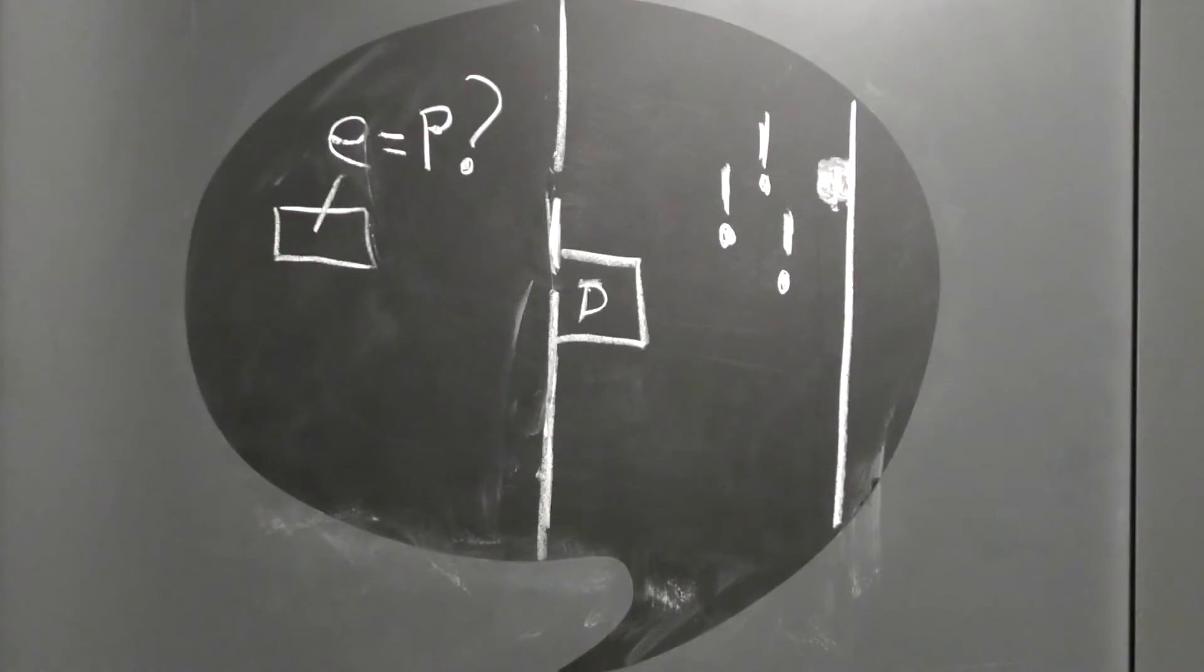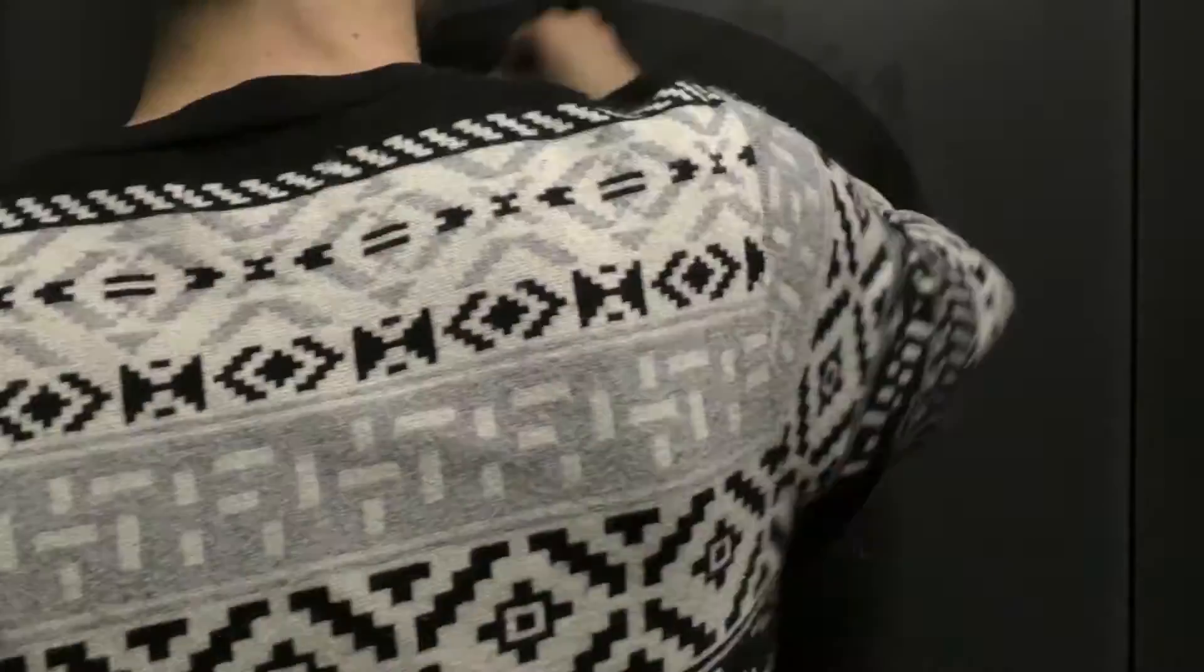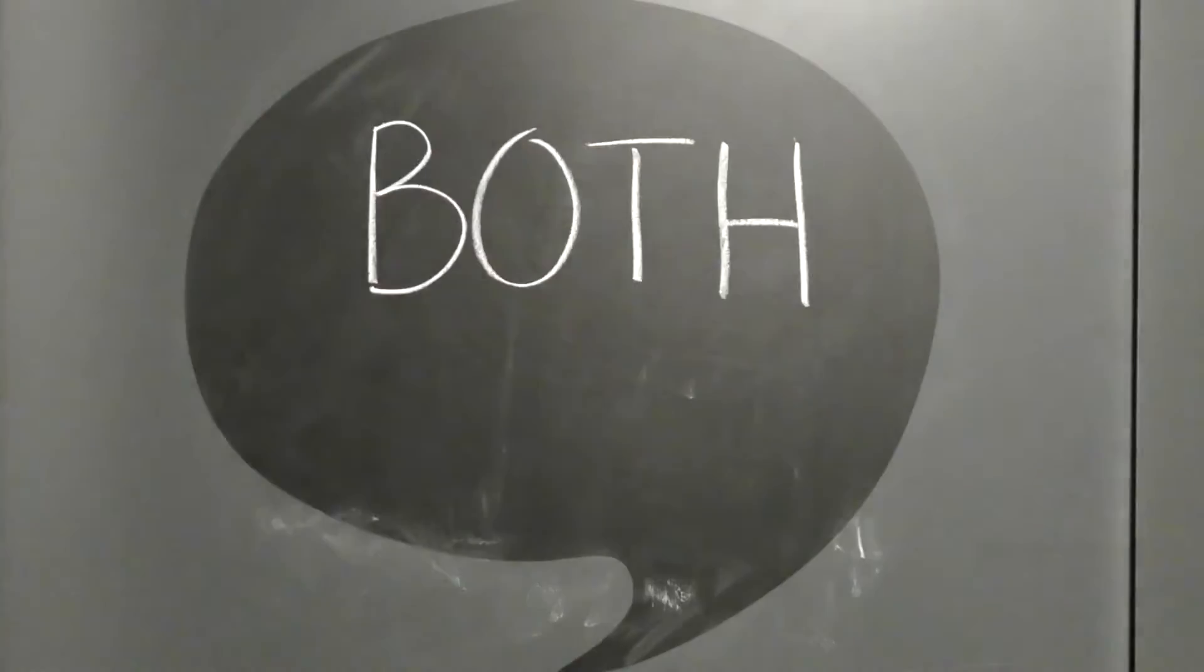An even stranger thing happens when we put a detector in front of one of the slits. In this case, we see a single peak on the screen. Does this mean that electrons are particles?